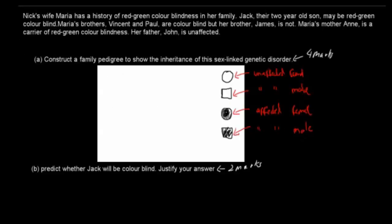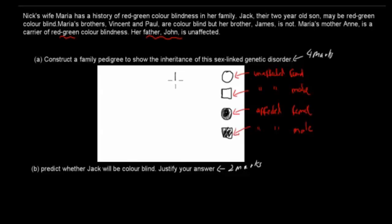So what do we have given? We know that her father John is unaffected. We'll start with the actual parents of Maria. So her father John is unaffected, and the mother is a carrier. Maria's mother Anne is a carrier of red-green colorblindness. So we have the father who is unaffected, and whilst Maria is also unaffected, she is a carrier.